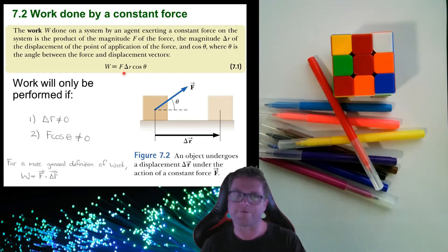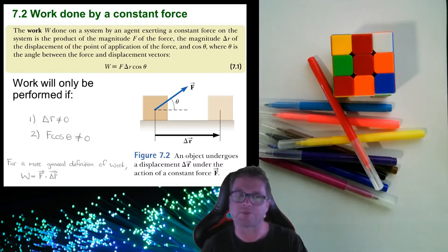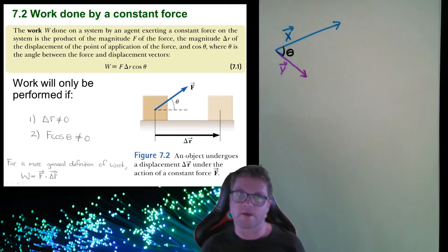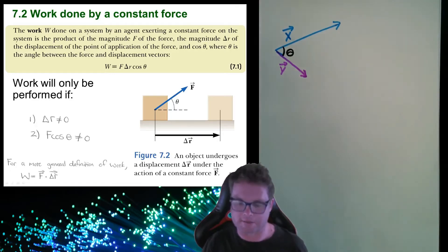The definition of work can be rewritten in terms of dot products. A dot product or scalar product is a concept relating to two vectors and describes one way in which they can be multiplied together. It's called the scalar product because when you multiply the two vectors together, the answer you get is a scalar — just a number.